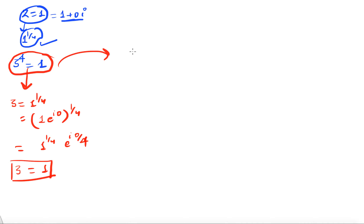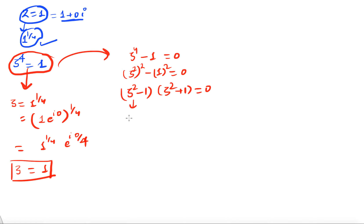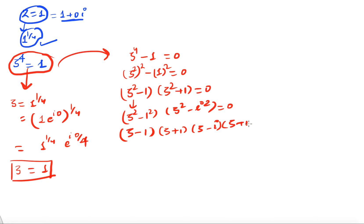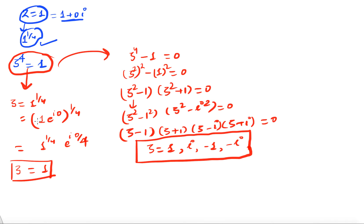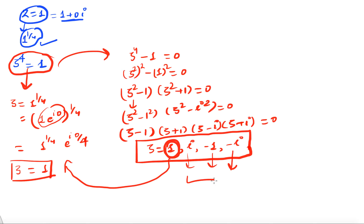The other way is algebraically: ζ^4 − 1 = 0, which factors as (ζ²−1)(ζ²+1) = 0, and further as (ζ−1)(ζ+1)(ζ−i)(ζ+i) = 0. So we get ζ = 1, i, −1, −i — these are the fourth roots of unity. But writing in polar form using the principal argument, we obtained only the first root ζ = 1. Let us see how to obtain the other three roots.